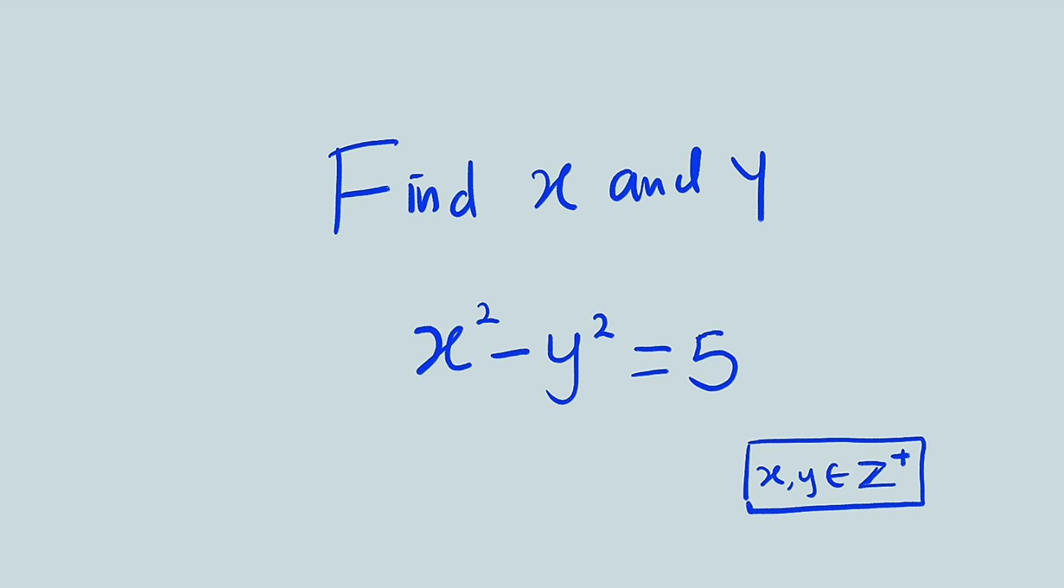Hello, good morning viewers. In this tutorial, we are going to find a solution to this equation, x squared minus y squared equal to 5. We are given that both x and y are positive integers.